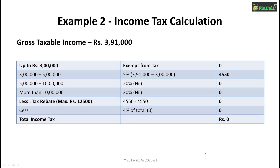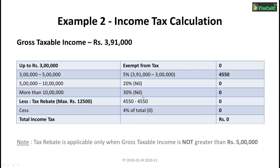Income tax on Rs 3,91,000 is calculated as follows: 5% income tax on income from Rs 3,00,000 to Rs 3,91,000, which equals Rs 4,550. The 20% and 30% slab rates will not be applicable in this case. Since the gross taxable income is below Rs 5,00,000, a tax rebate of Rs 12,500 will be applicable, which makes your income tax equal to zero. Taking advantage of the tax rebate, you can pay absolutely zero income tax if your gross taxable income is below Rs 5,00,000.